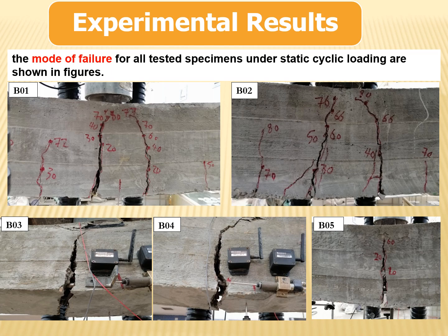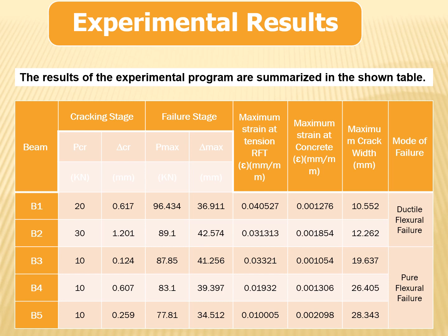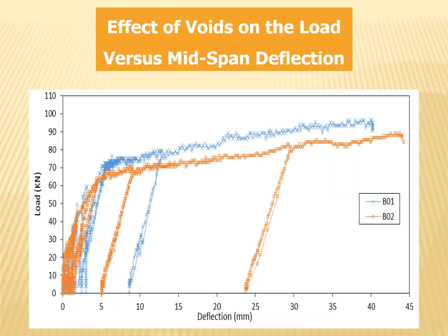The mode of failure for all tested beams under static cyclic loading are shown in the figure. The results of the experimental program are summarized in the table shown. The effect of voids on the load versus mid-span deflection is shown in the figure below.